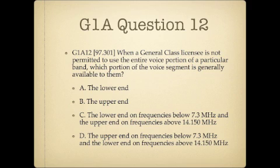Question 12. When a general class licensee is not permitted to use the entire voice portion of a particular band, which portion of the voice segment is generally available to them? A. The lower end. B. The upper end. C. The lower end on frequencies below 7.3 megahertz and the upper end on frequencies above 14.15 megahertz. Or D. The upper end on frequencies below 7.3 megahertz and the lower end on frequencies above 14.150 megahertz.